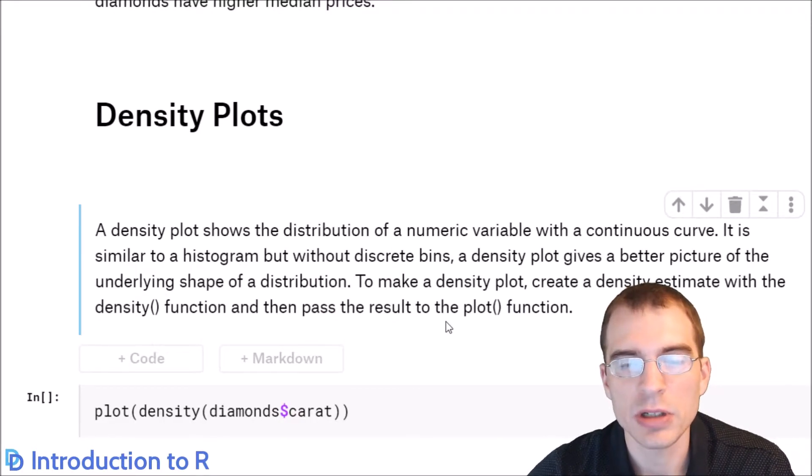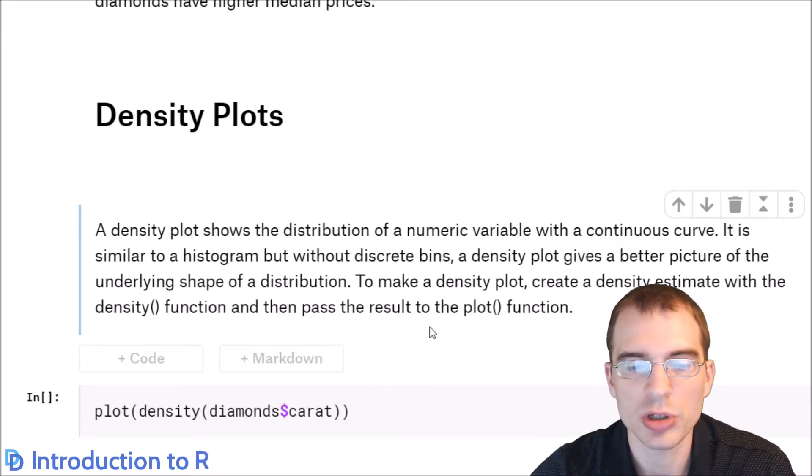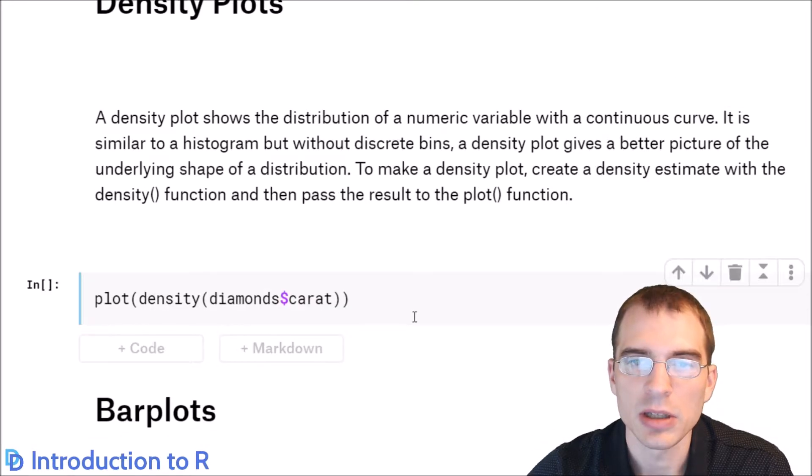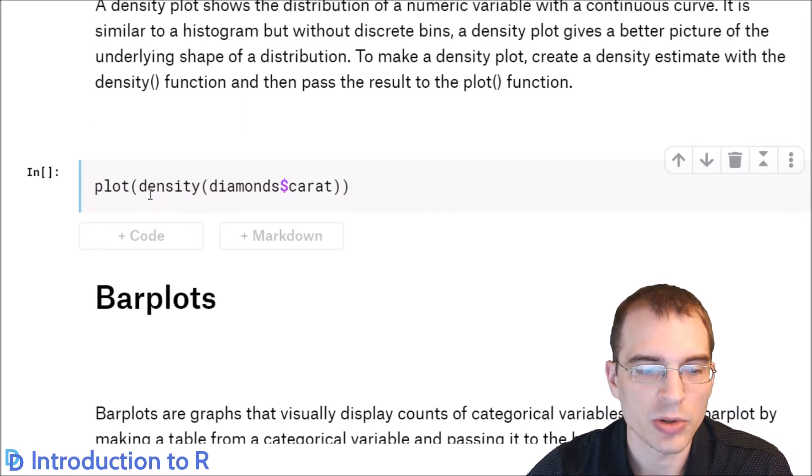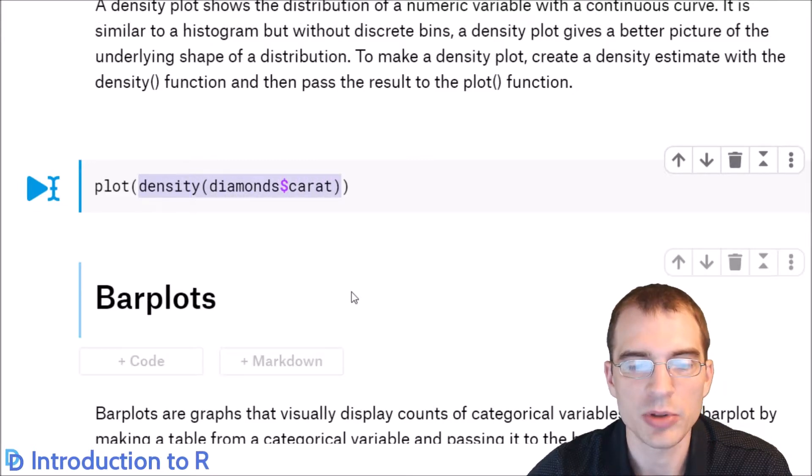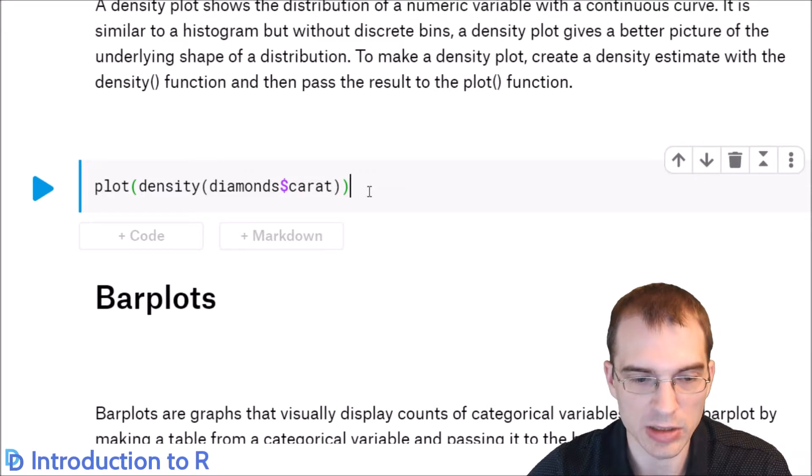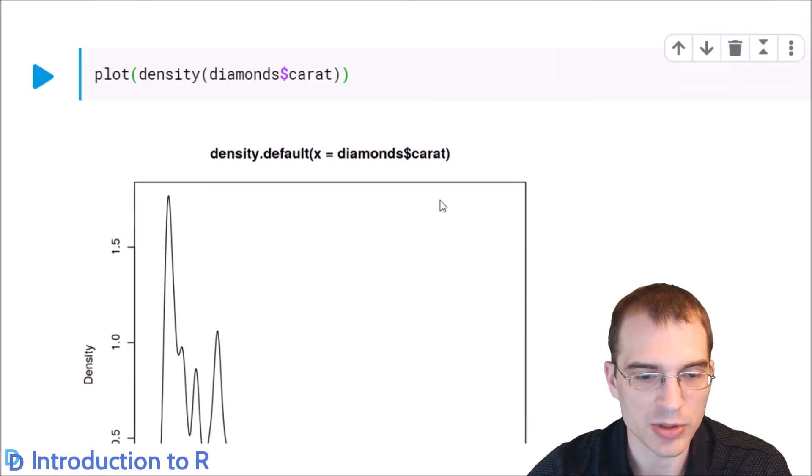We saw histograms earlier as a way to explore the distribution of a numeric variable. A density plot is an alternative method for doing that. It's essentially a continuous version of a histogram, in a sense. So instead of having bins, you simply have a curve that approximates what the distribution would be that that variable is drawn from. So to do that, you create first a density object by running the density function on the variable you want to plot. And you pass the result of that into just the plot function and it will create a density plot. So let's look at the density of carat to get a sense of how this compares to the histogram we saw earlier.